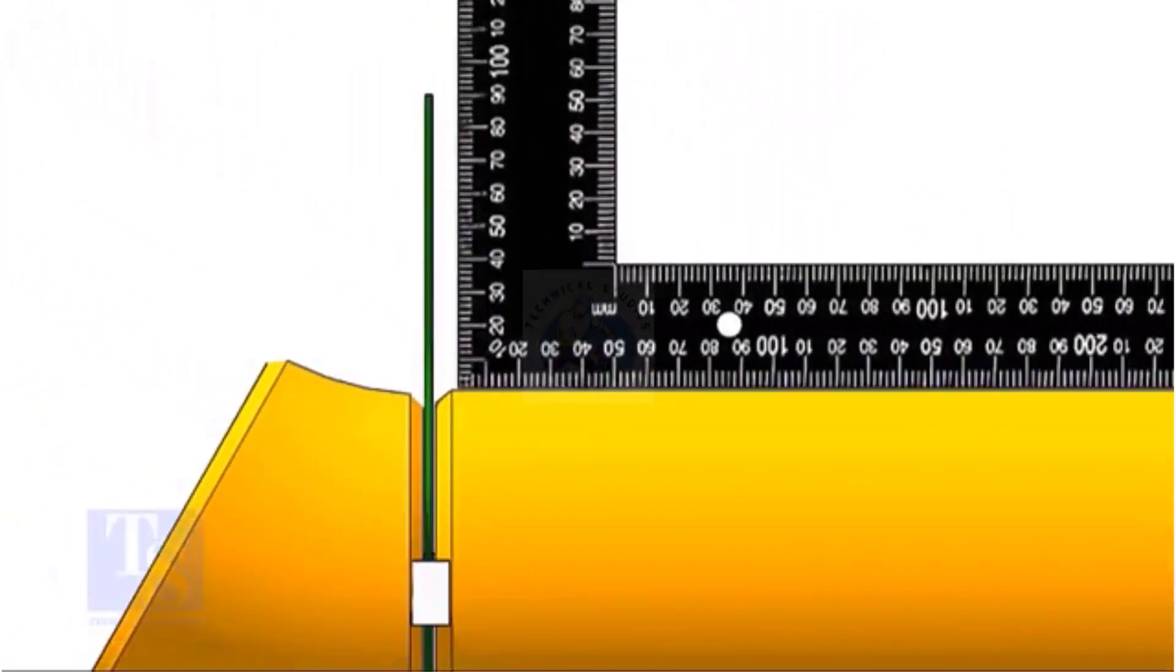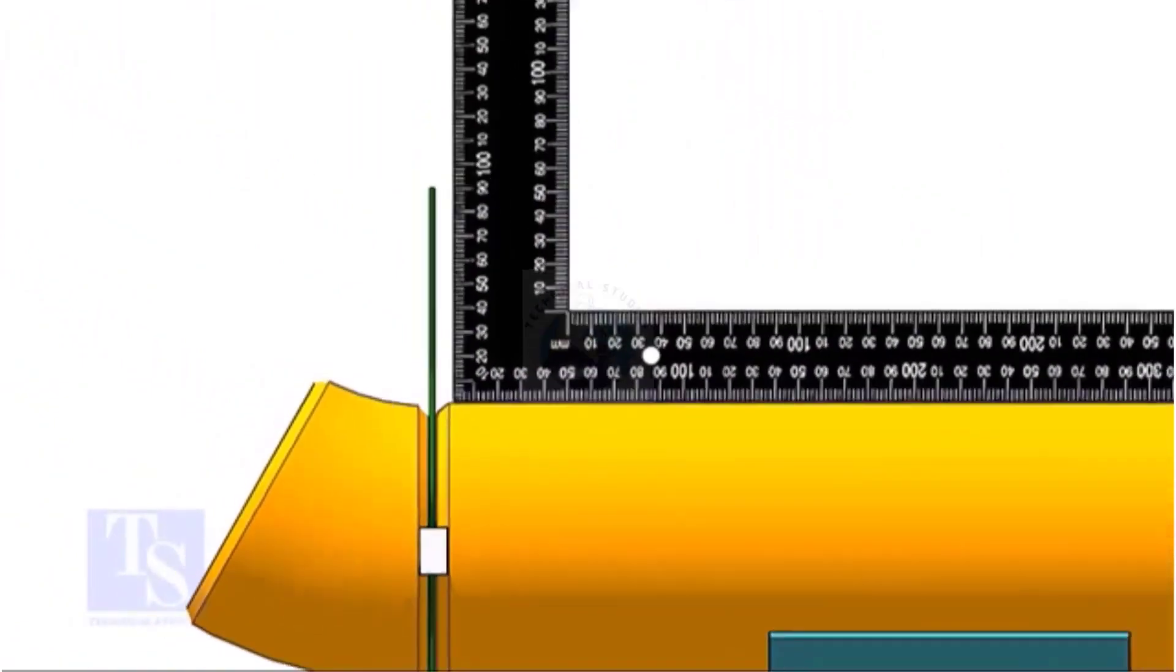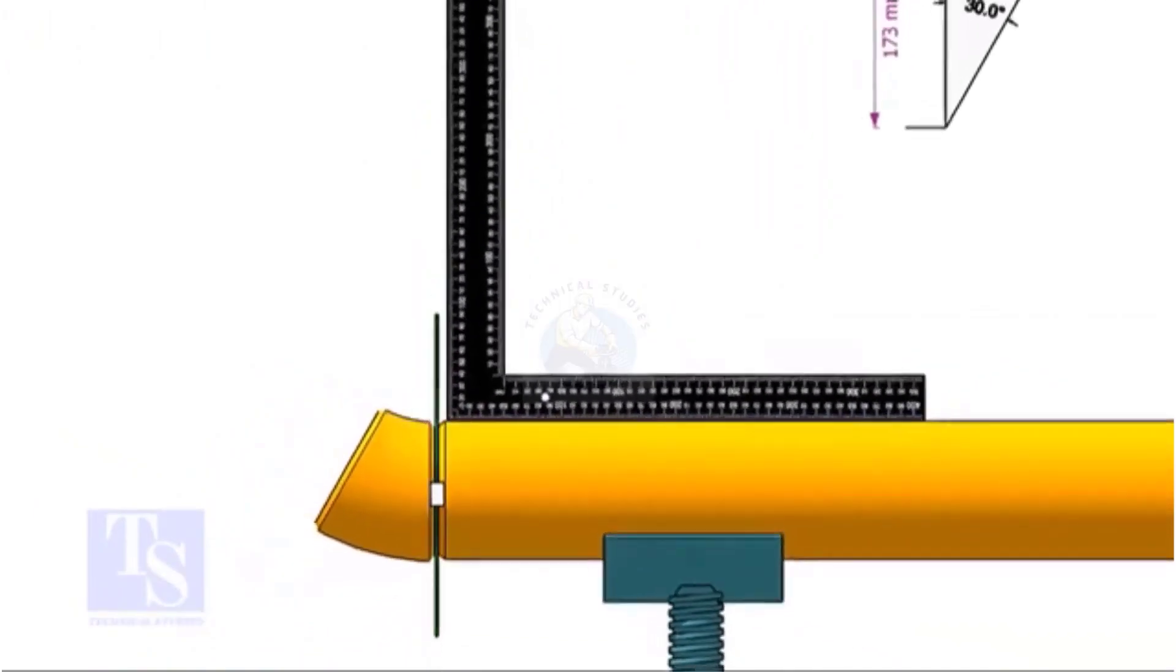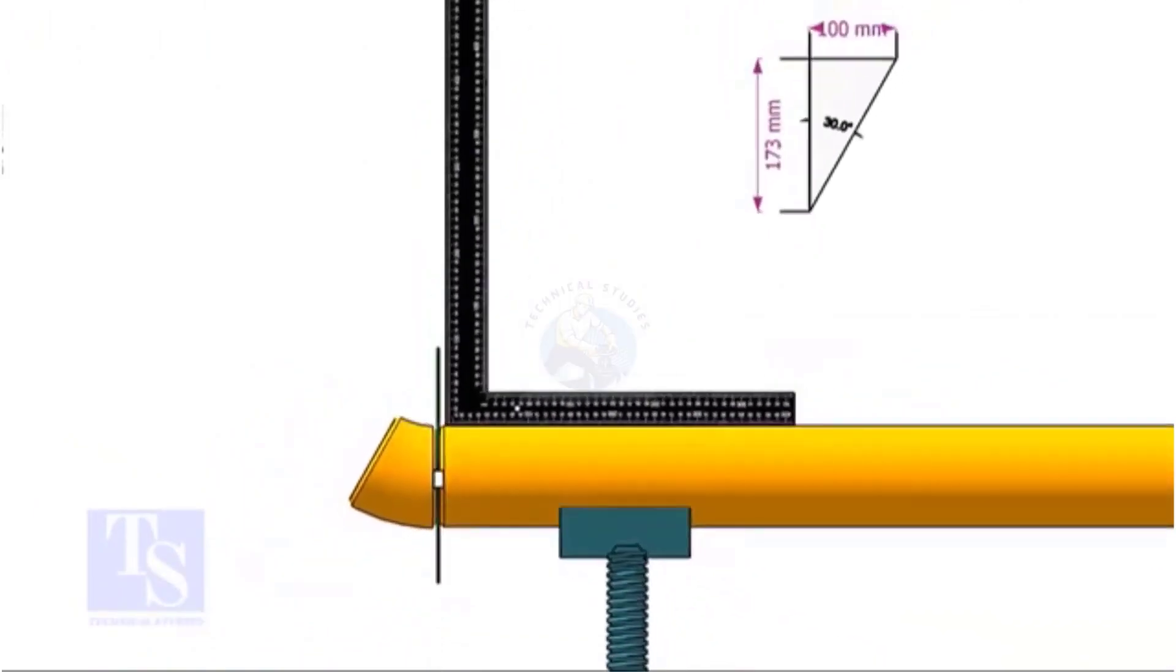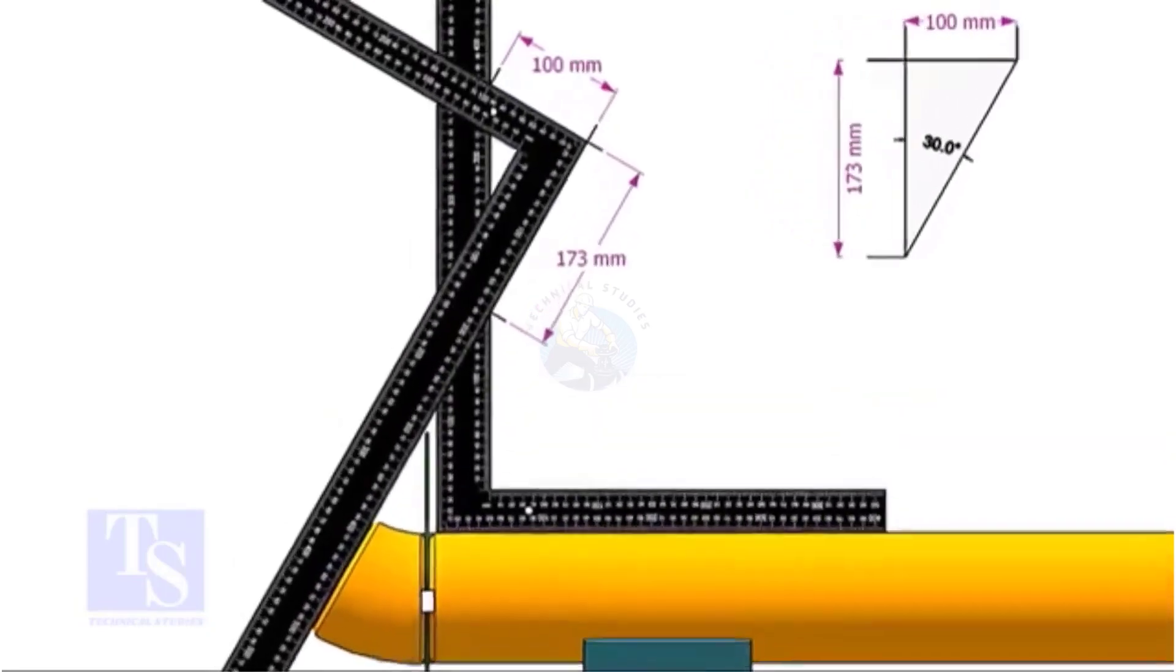After tack welding on both sides of the joint, hold another right angle on the edge of the pipe. Put the right angle on the face of the elbow as shown.